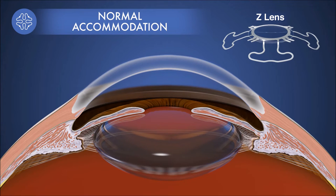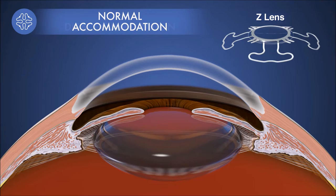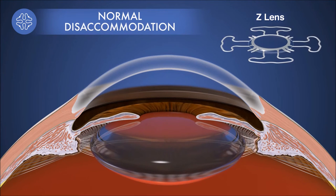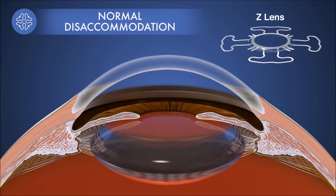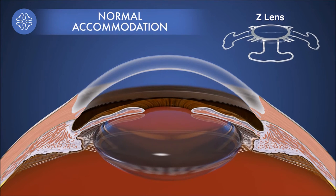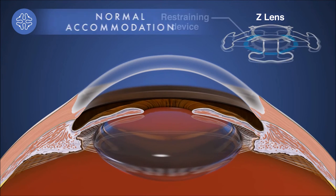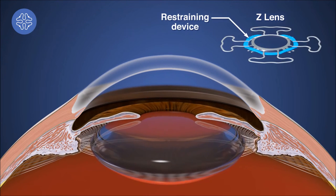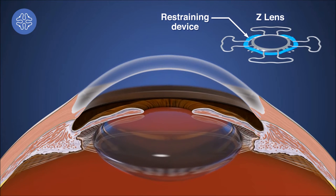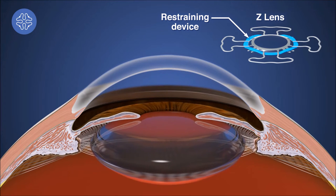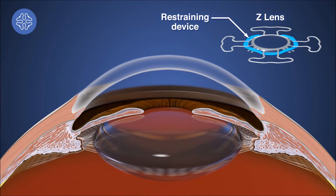In this way, the Z-lens moves back and forth in much the same way that the natural lens does during accommodation and disaccommodation. Before use, the Z-lens is temporarily restrained in a flat configuration.